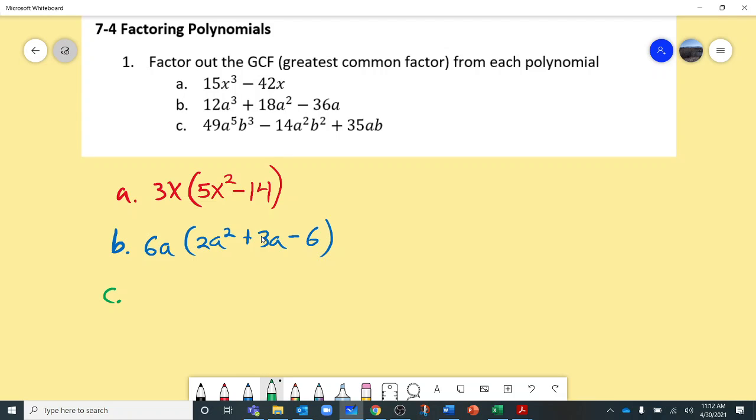Okay, so C, I have 49, 14, 35. I know 7 goes into all of those. So I'm going to take out a 7. I have A to the 5th, A squared, and A. So I can pull out an A. That's my lowest exponent. And I have a B cubed, a B squared, and a B. So B is also my lowest exponent. So I'm going to pull that out.